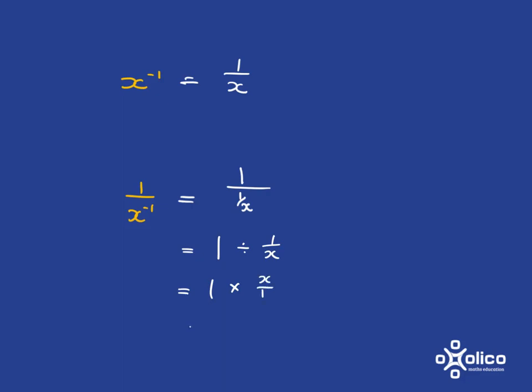Turn that into an x over 1, and so you've got 1 multiplied by x over 1, which is x over 1, and x over 1 is just x.